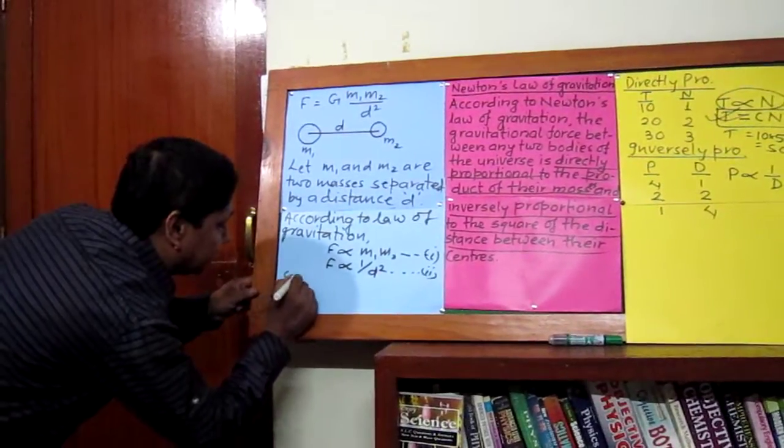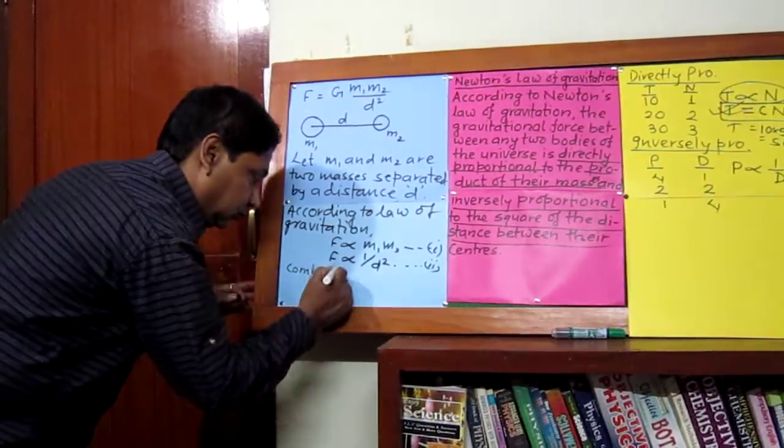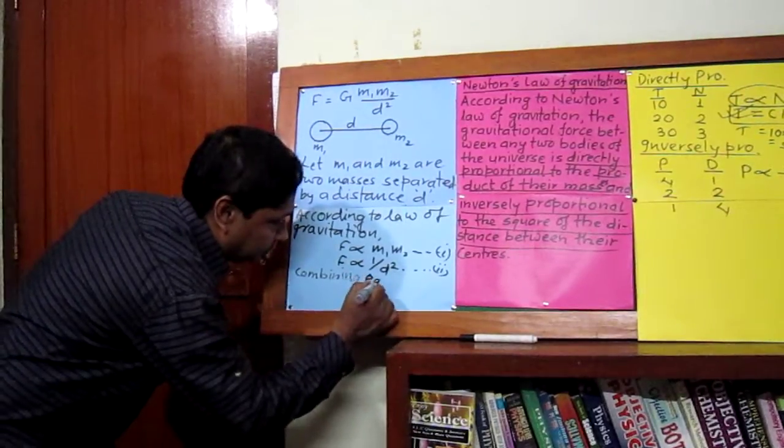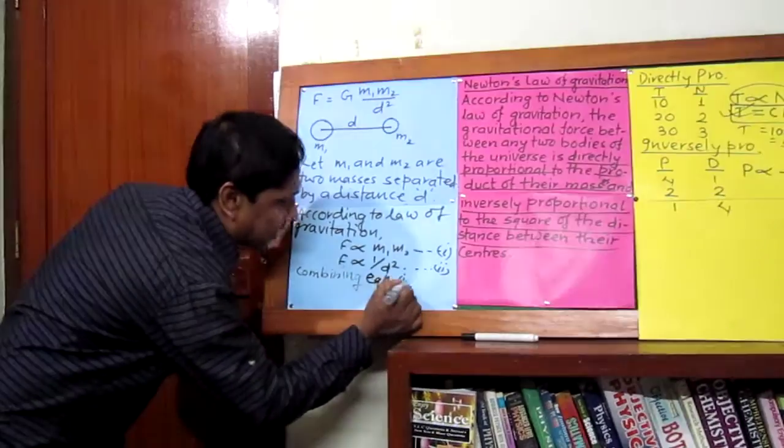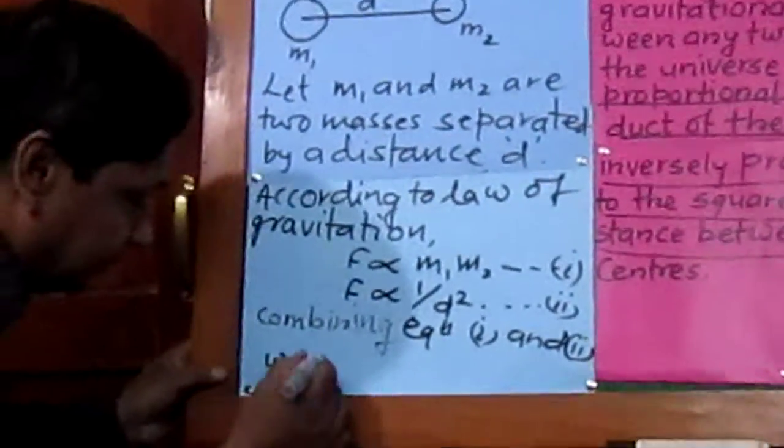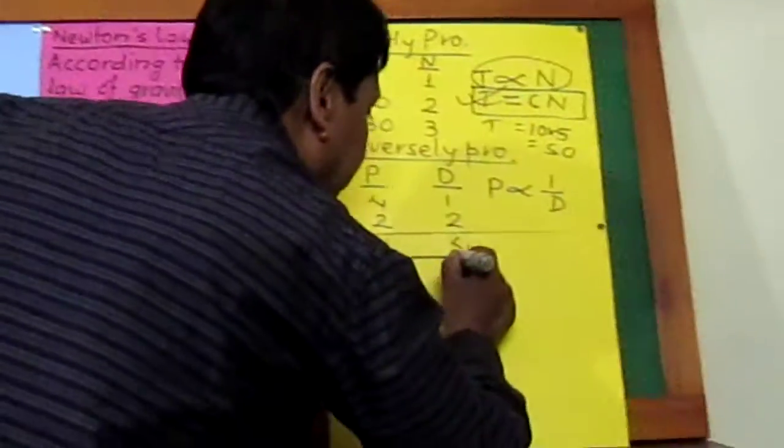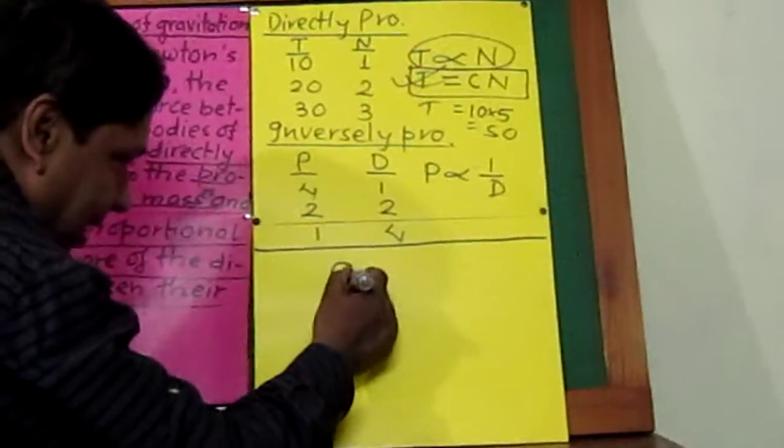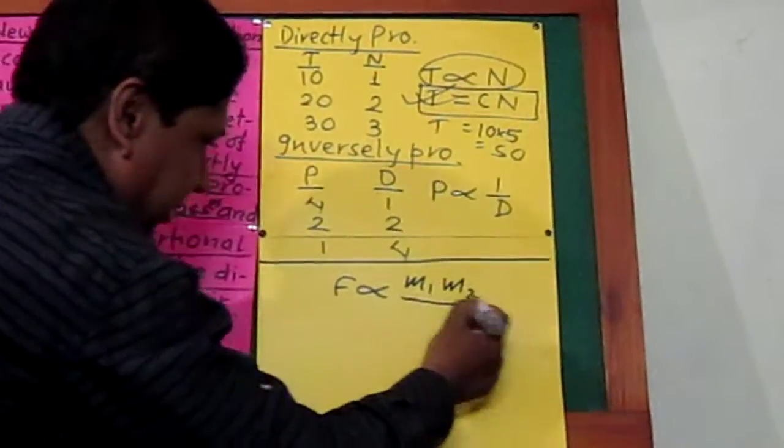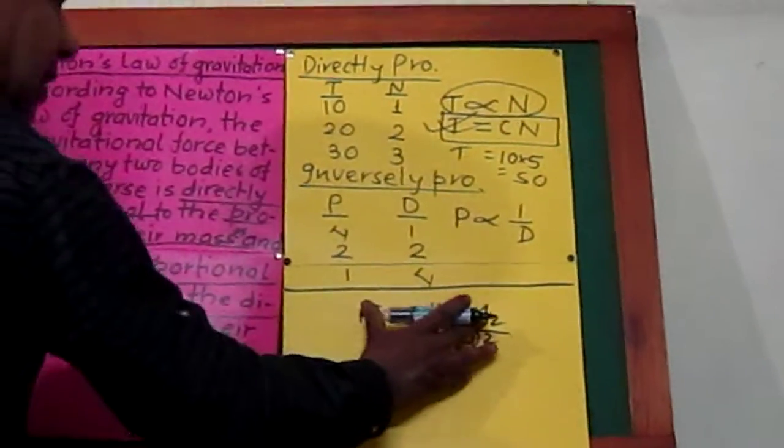Combining equation one and two, we get - I will write it here, look at this: F is directly proportional to m1 m2 but inversely proportional to d square. This is the combined form of the law.